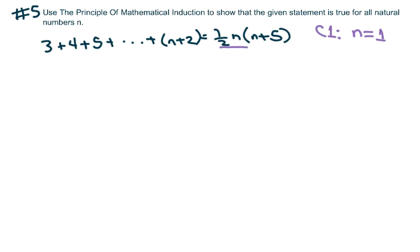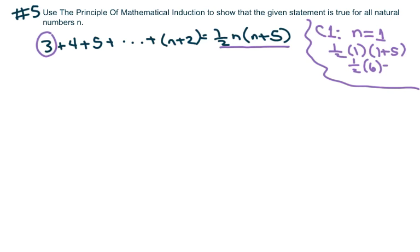When I plug in 1 for this n, it should equal the sum of the first term which is just 3. I'm going to plug that in here and it's going to be 1/2 times 1 times 1 plus 5, which is 1/2 times 6. One half of 6 is 3, so yes, condition 1 holds.